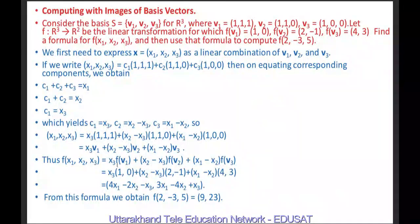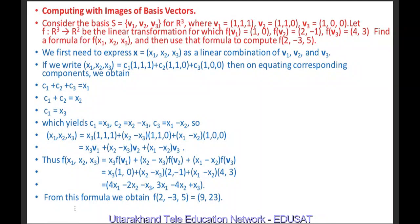Substituting F(V1) = (1,0), F(V2) = (2,−1), F(V3) = (4,3): F(x1,x2,x3) = x3·(1,0) + (x2−x3)·(2,−1) + (x1−x2)·(4,3). Expanding: first component = x3 + 2x2 − 2x3 + 4x1 − 4x2 = 4x1 − 2x2 − x3; second component = 0 − x2 + x3 + 3x1 − 3x2 = 3x1 − 4x2 + x3. Using this formula, F(2, −3, 5) = (4·2 − 2·(−3) − 5, 3·2 − 4·(−3) + 5) = (9, 23).